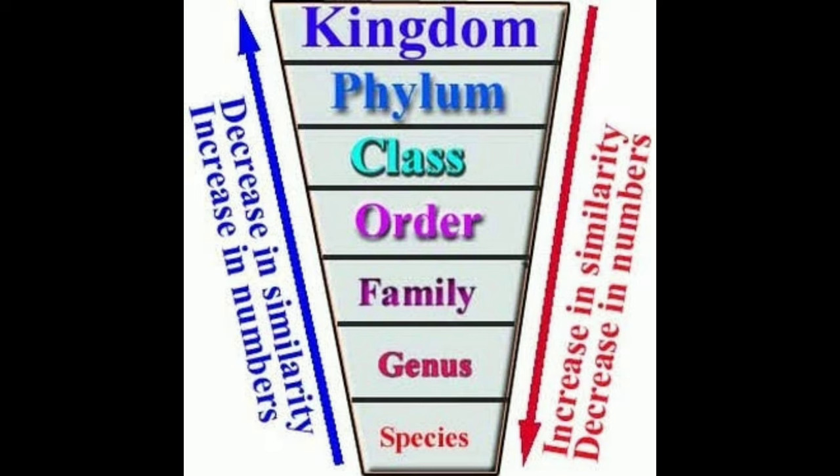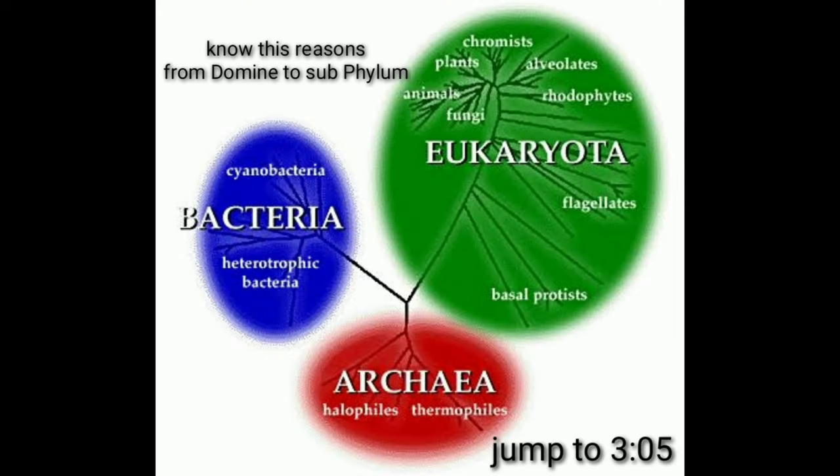Each of these hierarchical orders have sub-categorization. For example, phylum has subphylum, and class has superclass, class, subclass, and even infraclass. Fish are included in domain Eukarya.